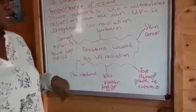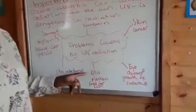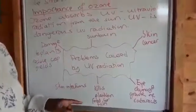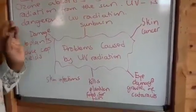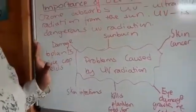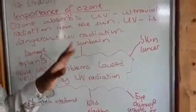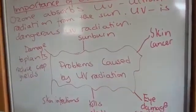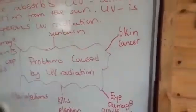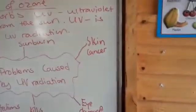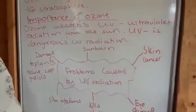What problems does UV radiation cause? It causes eye damage and growth of eye cataracts. It kills plants, which are the green plants within the atmosphere. It causes skin infections, skin irritations, and damage to plants. Damage to plants means our crops will be destroyed or reduced. People also have problems with sunburn, absorbing UV radiation, and skin cancers.